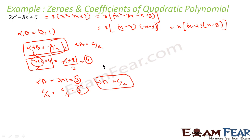Thus here also we have proved that the formula we derived is correct: α + β = −B/A and α·β = C/A, where α and β are zeros and A, B, C are coefficients of the quadratic polynomial. This was just one example to verify the theorem.